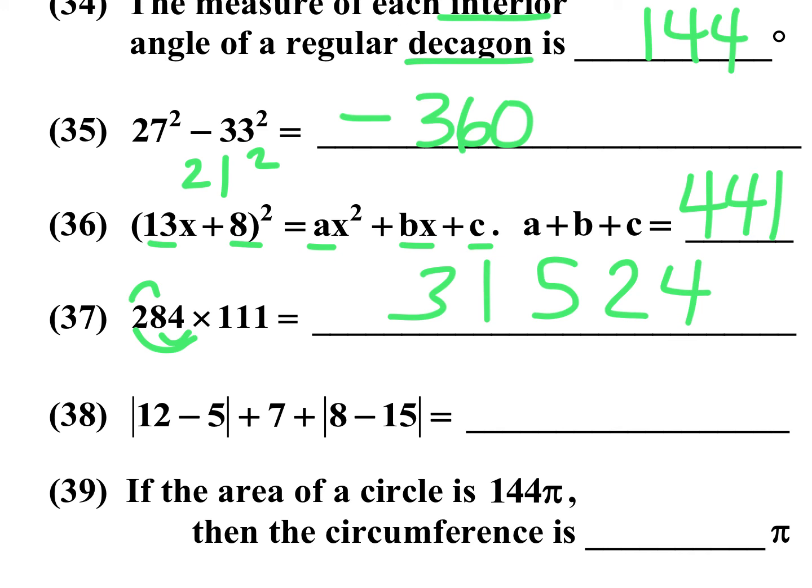Absolute value. 12 minus 5, absolute value is 7. 8 minus 15 is negative 7, absolute value is 7. 7 plus 7 plus 7, 7 times 3 is 21.